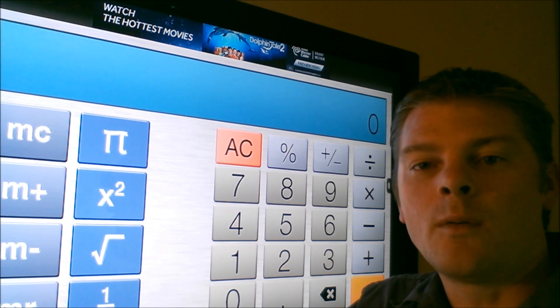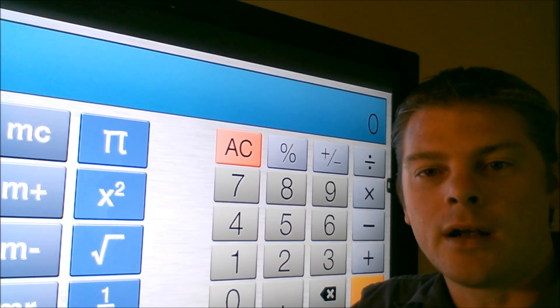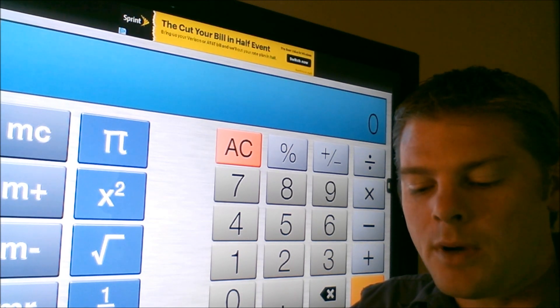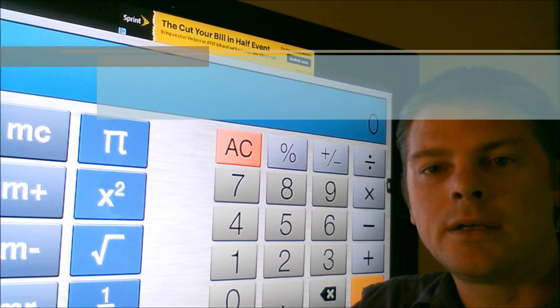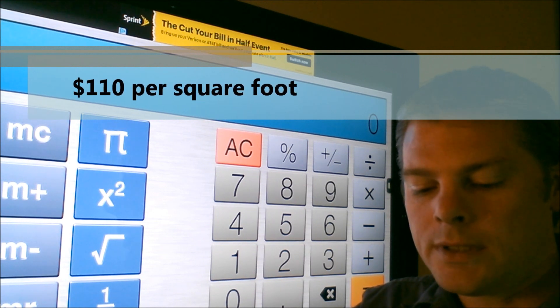After you've done your homework, you'll be able to find out what the price per square foot is in your area. So let's assume, just for illustrative purposes, that the price per square foot is $110 a square foot.